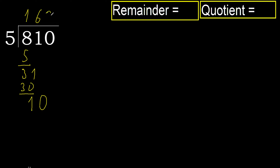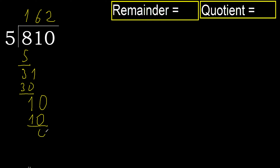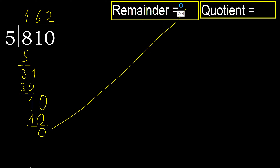5 multiplied by 2 is 10, which is not greater. Ok, subtract: 10 minus 10 equals 0. Next — there is no number remaining, therefore finish.